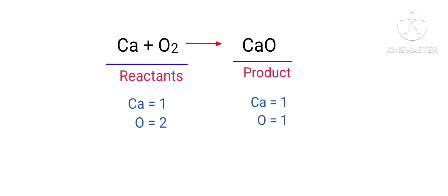In this equation, we need to balance the oxygen atoms. To do this, we need to put a coefficient of two in front of CaO. The oxygen atoms are balanced.